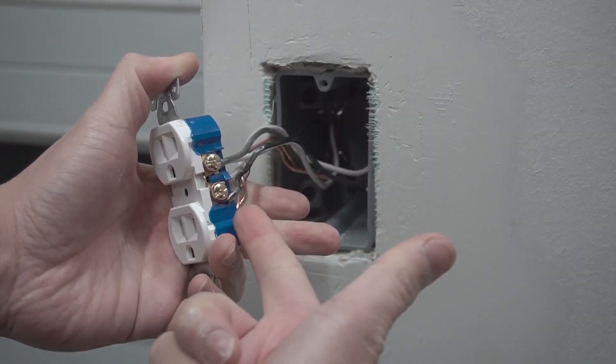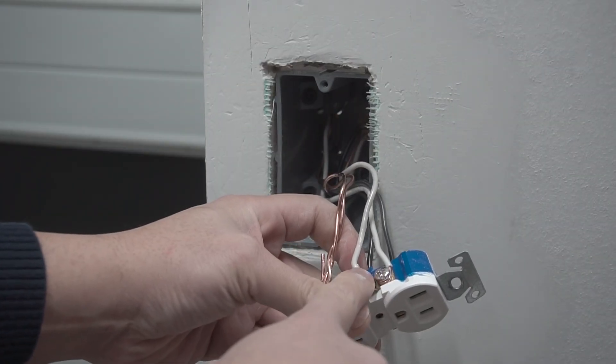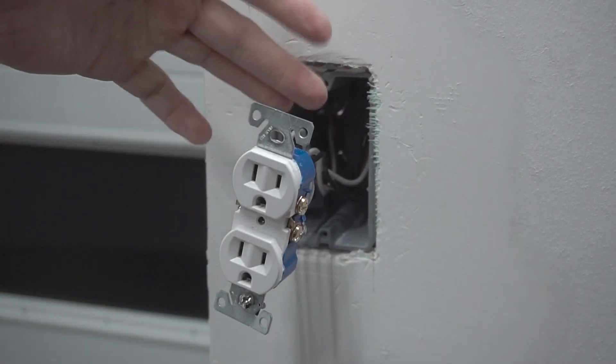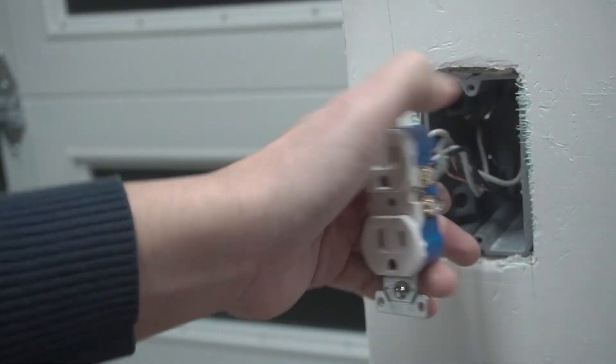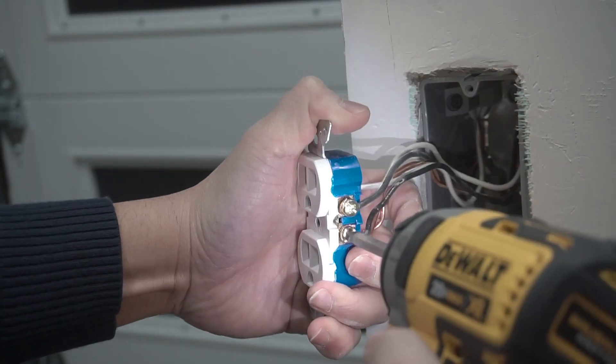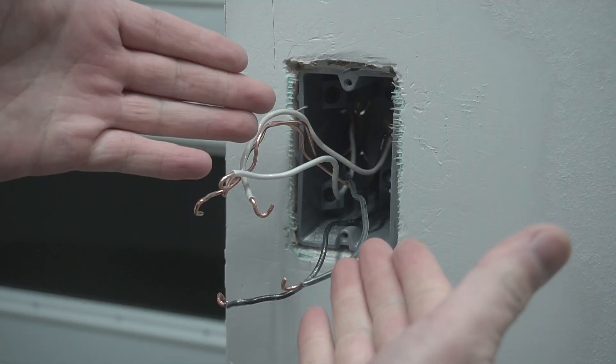Looking at this outlet, you can see that there's two black hot wires going to each terminal, two neutral wires going to this other terminal right here, and two ground wires. Probably another outlet connected to this, just like this. Let's just pretend it's running to that one. Pretend there's an outlet there. No problem. All we're going to do now is just take these wires off.